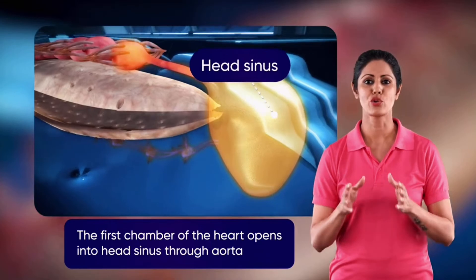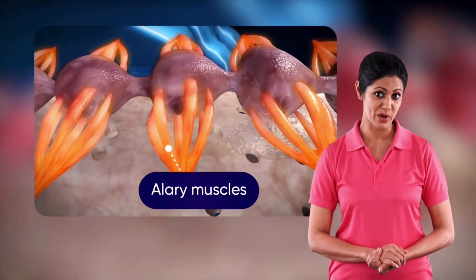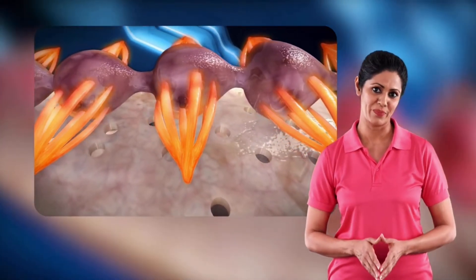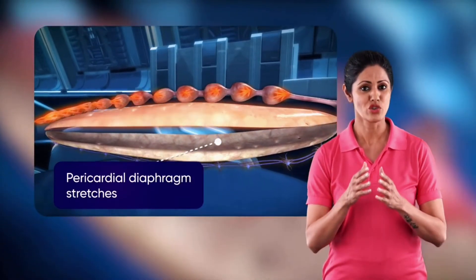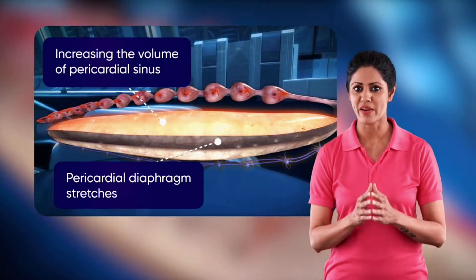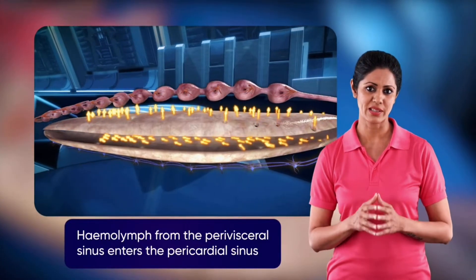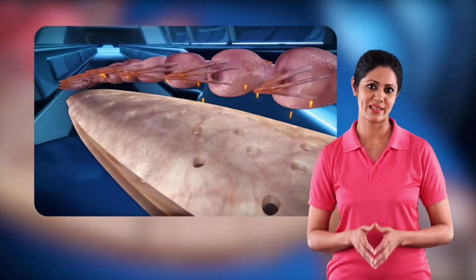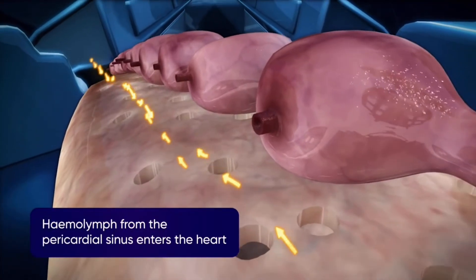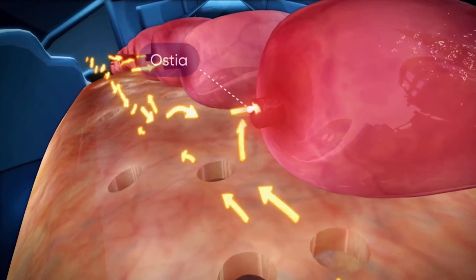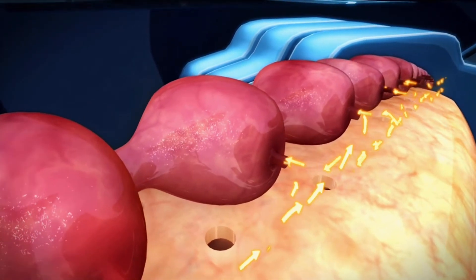The first chamber of the heart opens into the head sinus through the aorta. A pair of alary muscles is present on either side of the heart chamber. When the alary muscles contract, the pericardial diaphragm stretches, increasing the volume of the pericardial sinus.